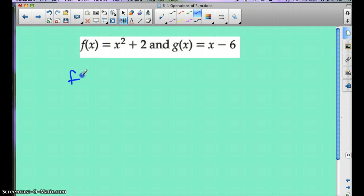And let's find f of g of x again. So I'm going to plug in g of x into my x's here. So it's going to be g of x, that one's squared, plus 2. So g of x is x minus 6 squared, plus 2.